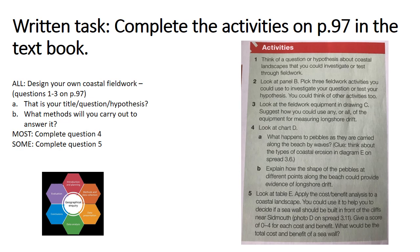When you've come up with a question, use the textbook and your own knowledge to think of methods you could carry out to try and answer it. Don't just jot them down — actually try and write why that method would be helpful. For example, if you say you're going to do a wave count, why is that going to help you answer your question? If you've done all that, most of you could do question four, which is practising analysing data — looking at data someone else collected and thinking about what it shows. Then some of you could have a go at question five, which is about cost-benefit analysis.